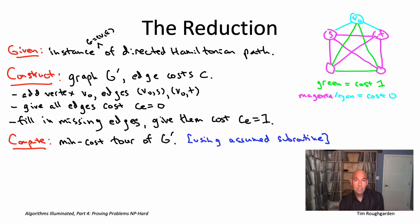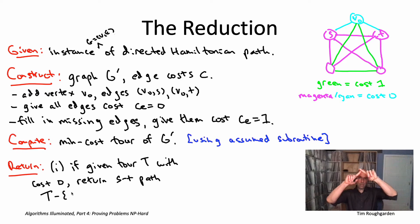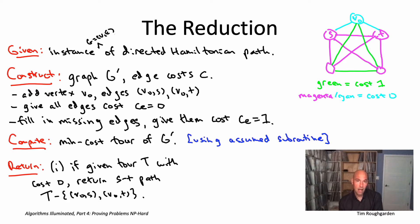Specifically, if the TSP subroutine hands us back a tour with total cost zero, any such zero-cost tour must include the two light-blue edges incident to V-naught connecting it to S and T. We return the path obtained by removing those two edges from the tour — that gives a path from S to T visiting every vertex in the original graph, which is a Hamiltonian path. On the other hand, if the tour has cost bigger than zero, we conclude there was no Hamiltonian path in G.